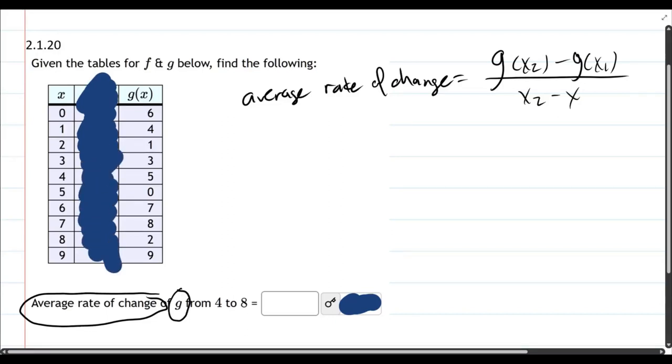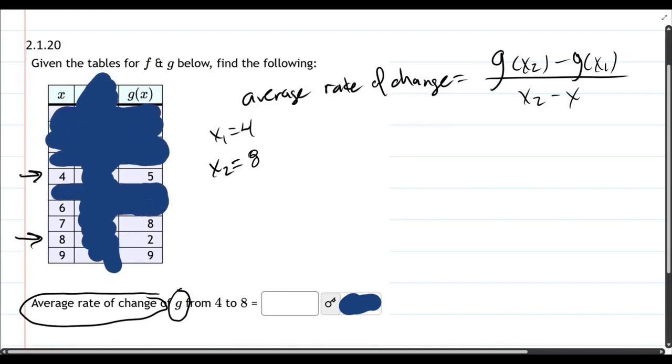Now we're going from 4 to 8. x₁ is 4, x₂ is 8. So we have 4 and 8 right here, and if you want, you can cross out the rest of this table so we're just looking at the right values and not additional values.